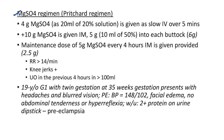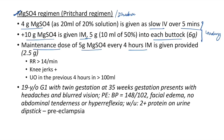Magnesium sulfate regimens: Pritchard regimen — loading dose of 4 g IV as 20 mL of 20% solution over 5 minutes plus 10 g IM (5 g = 10 mL of 50% solution into each buttock); maintenance dose 5 g IM every 4 hours. Before each maintenance dose, check respiratory rate (>14/min), knee jerk present, and urine output in previous 4 hours >100 mL. Zuspan (Dhaka) regimen: same IV loading dose, but only 6 g IM loading (3 g each buttock), and maintenance dose is 2.5 g IM.